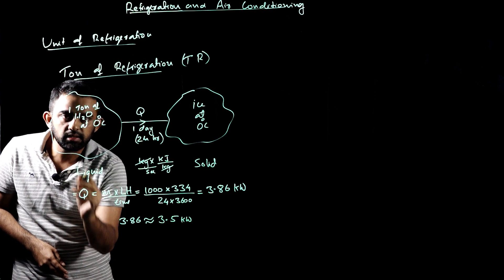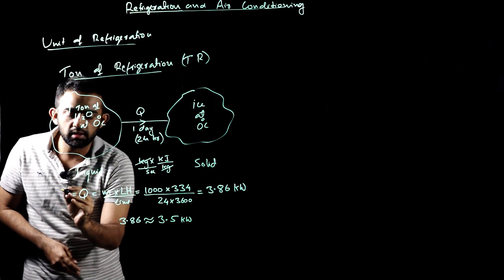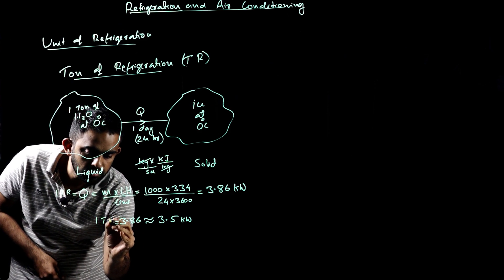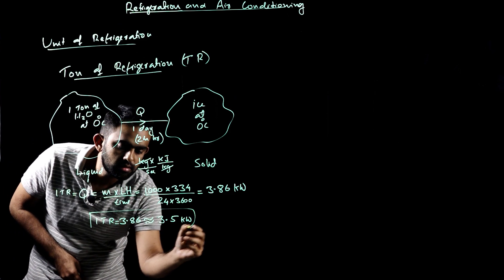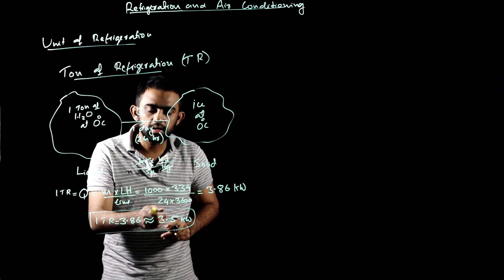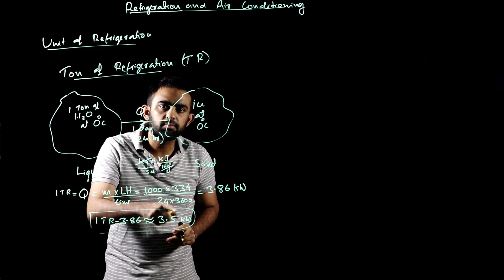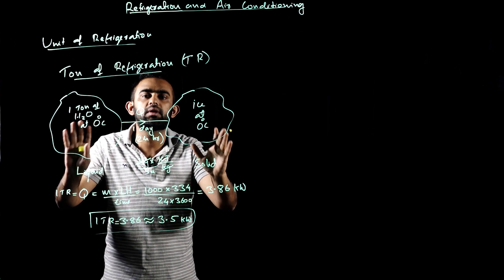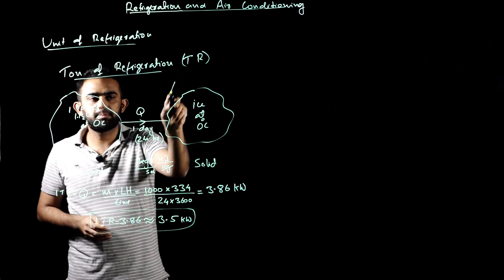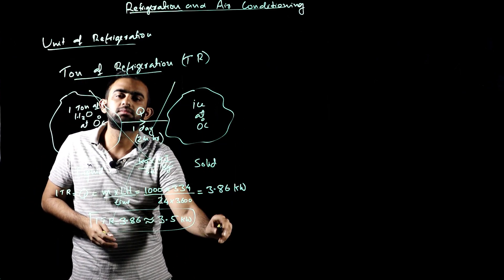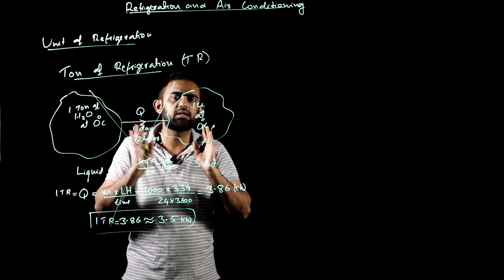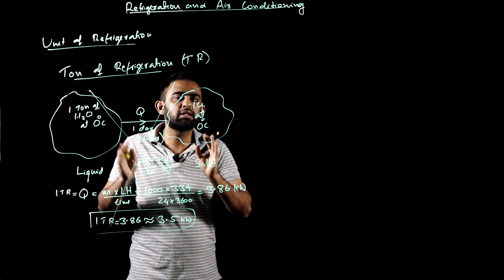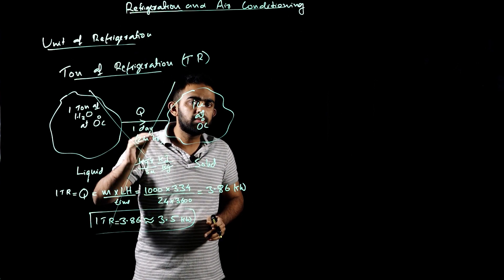So one ton of refrigeration — 1 TR — equals 3.5 kilowatts. However, this approach is actually wrong. The ton concept involves a convention issue and we need to check for a mistake in how we defined the ton.